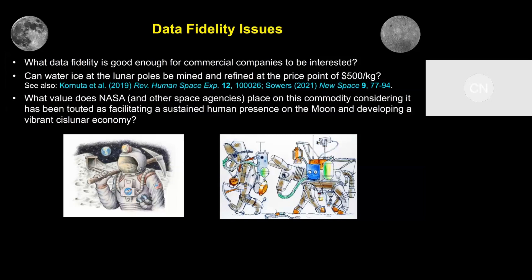I leave with a number of questions. What data fidelity is good enough? Can water at the lunar poles be mined and refined at a price point of $500 per kg? There are other papers that have looked at this as well, including another one from George. What value are NASA and other space agencies going to place on this commodity, considering it has been touted as facilitating a sustained human presence on the moon and developing a vibrant cislunar economy?